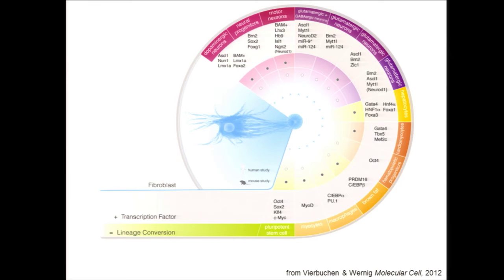Since then, many more examples have been reported. Typically people start from the fibroblast population, which is easily accessible and easy to work with. There are now many examples of the directions they can be pushed — both into endodermal and ectodermal lineages. There's a big focus on the neural lineage and whether we can get specific neuronal subtypes, since there are so many in our brains. Motor neurons, as just mentioned, is one example that was also successful.